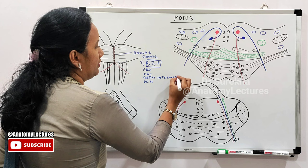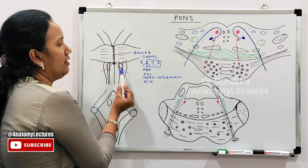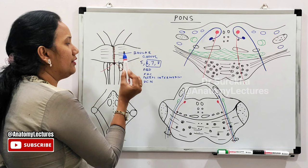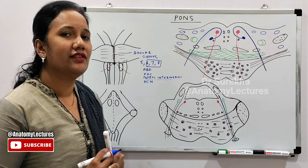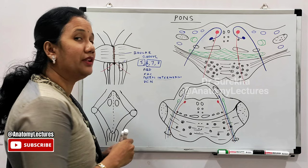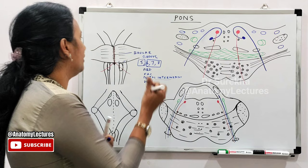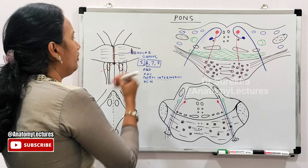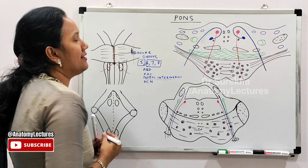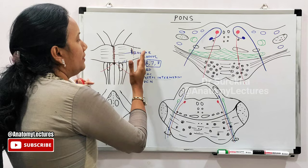In the junction between the facial nerve and the vestibulocochlear nerve, another nerve called nervus intermedius — the sensory branch of the facial nerve — emerges. From the pontomedullary junction, medial to lateral: abducens nerve, motor root of facial nerve, sensory root of facial nerve (nervus intermedius), and then the vestibulocochlear nerve. The point where the pons meets the middle cerebellar peduncle is called the pontocerebellar junction.